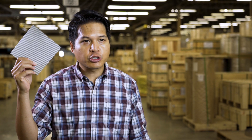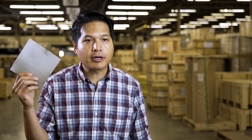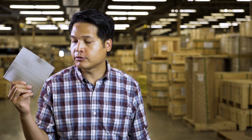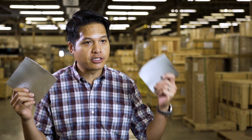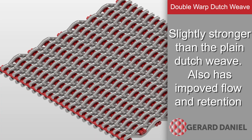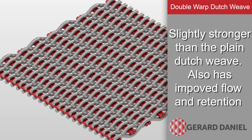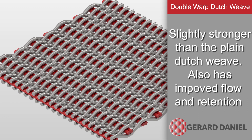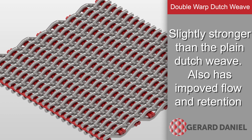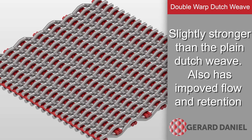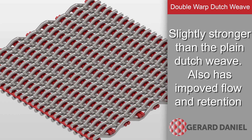For additional strength along the length of the coil, the warp wires in a plain Dutch weave can also be paired to form what is called a double warp Dutch weave. The pairing of these wires increases overall durability and strength while also slightly altering the geometry enough to see minor improvements to flow and retention characteristics. However, this weave may be more difficult to process due to the use of thinner wires and the reduced flexibility of the pattern.